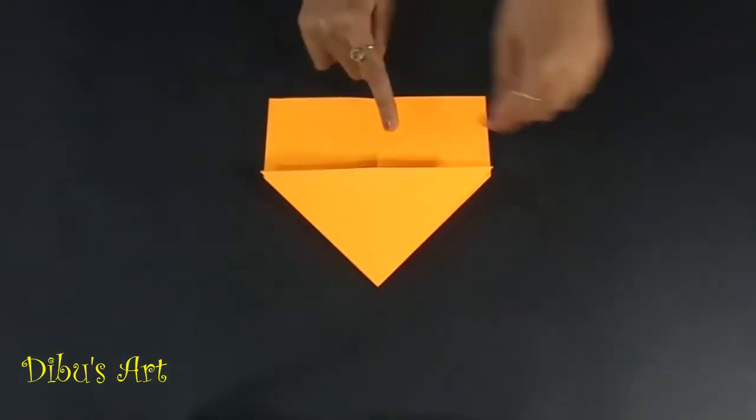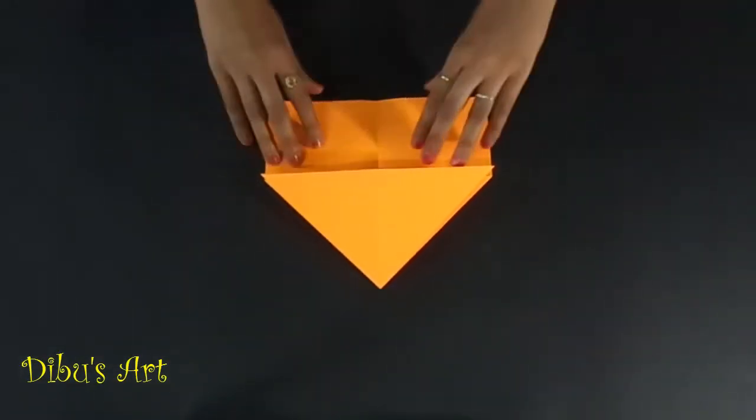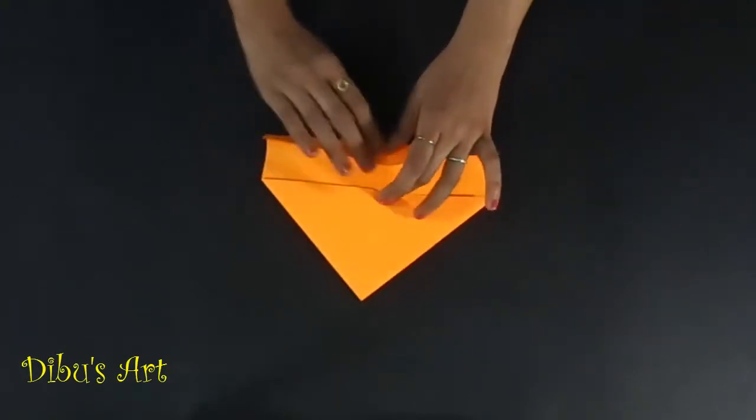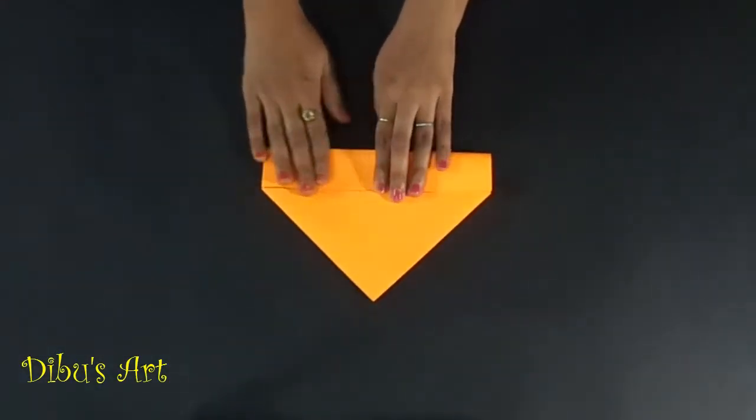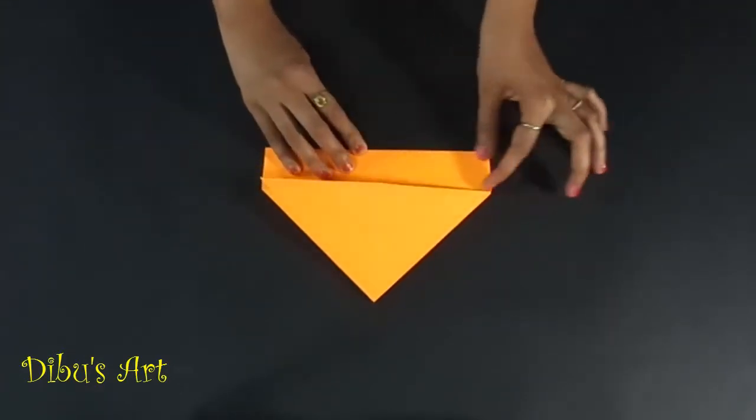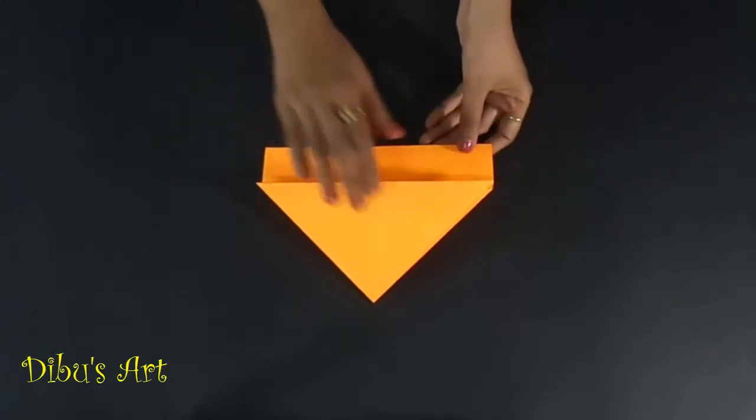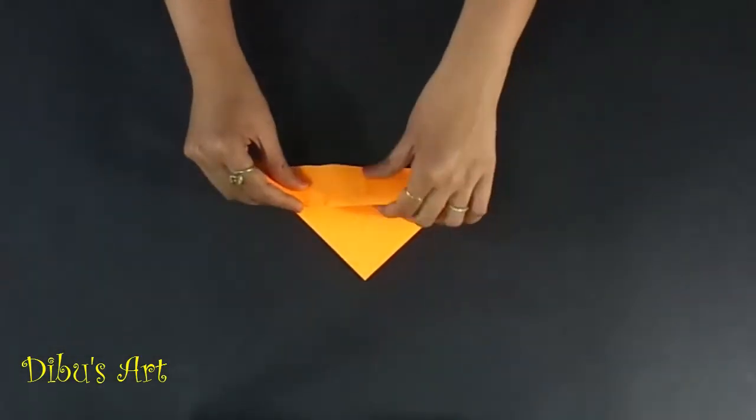The shape will look like a triangle with rectangular base. Now fold the down edge of rectangle until the base line of the triangle. Reverse the paper and fold it again from base of triangle towards upper point.